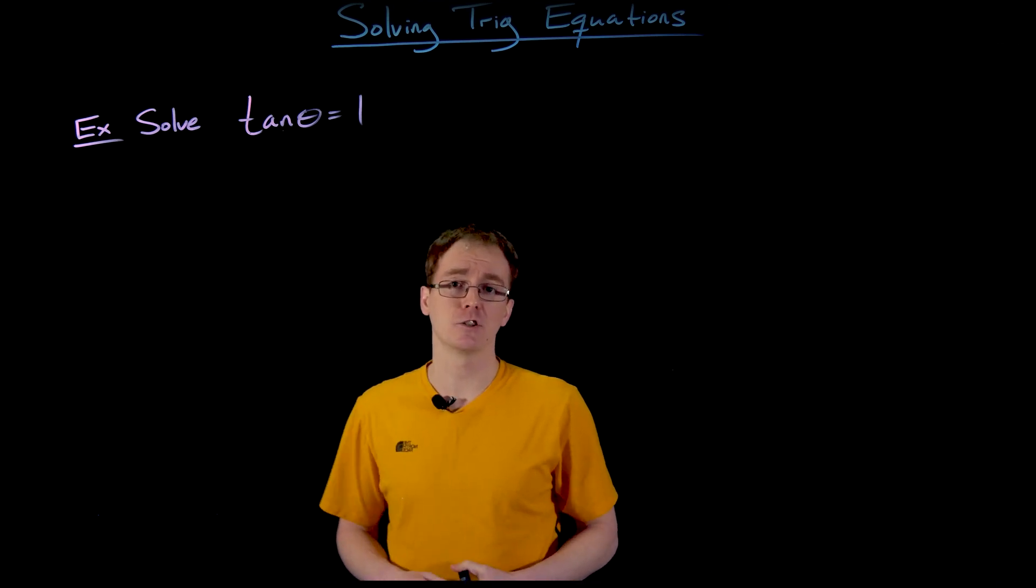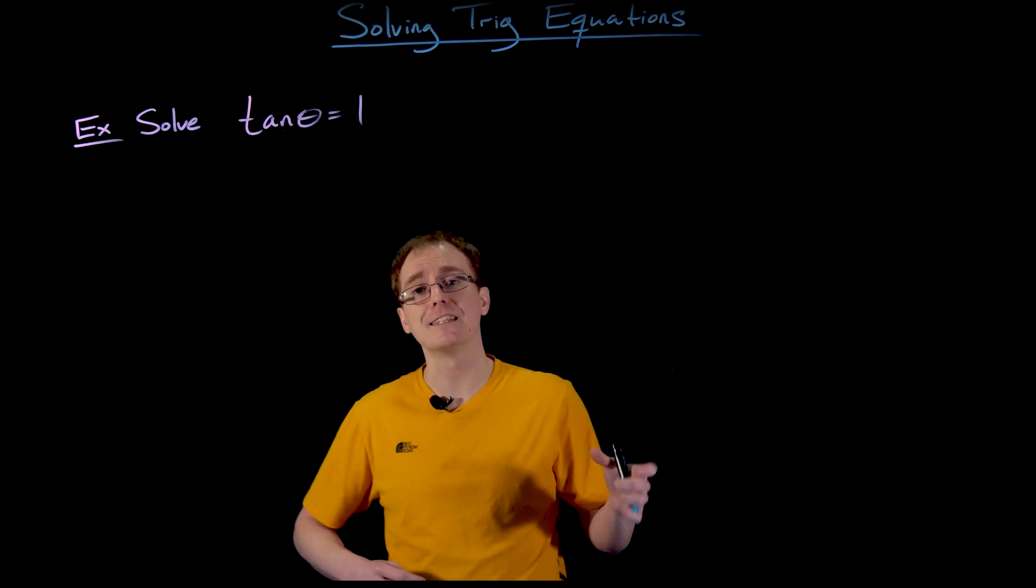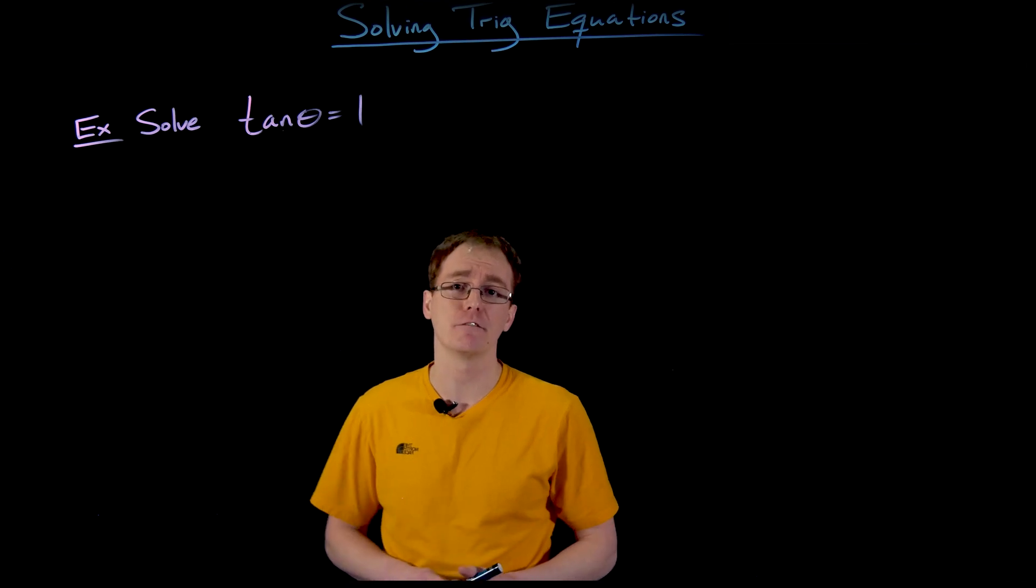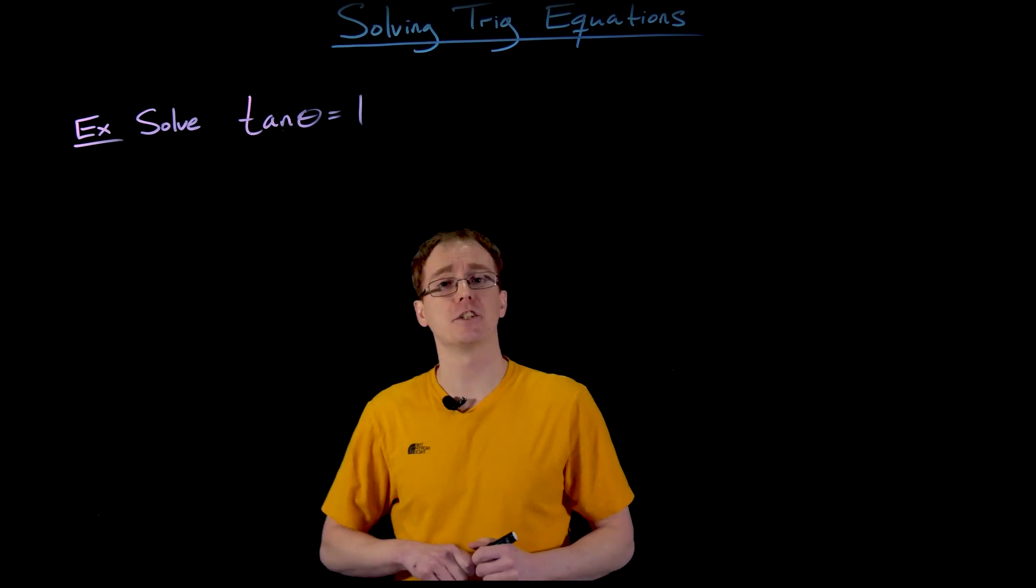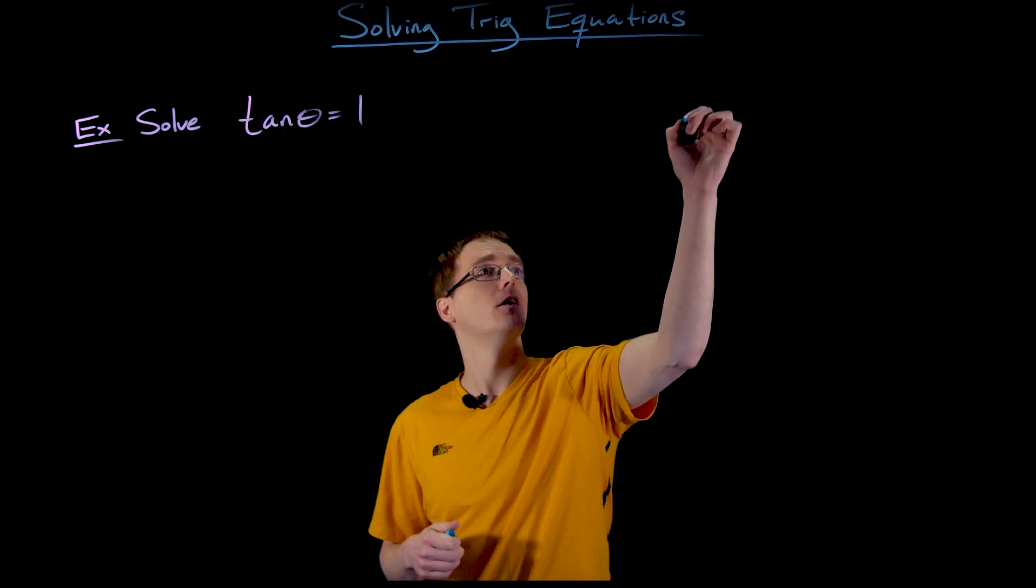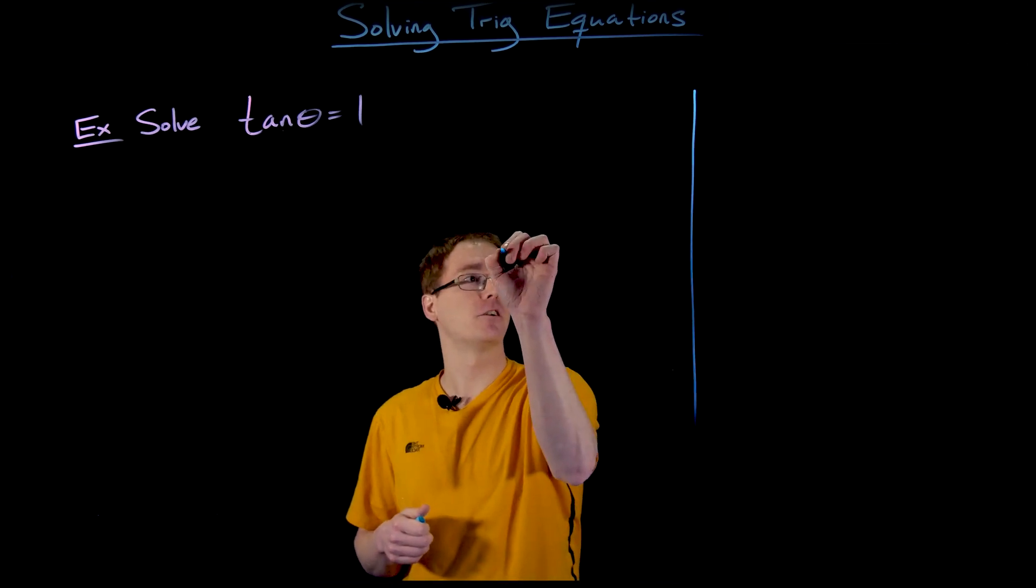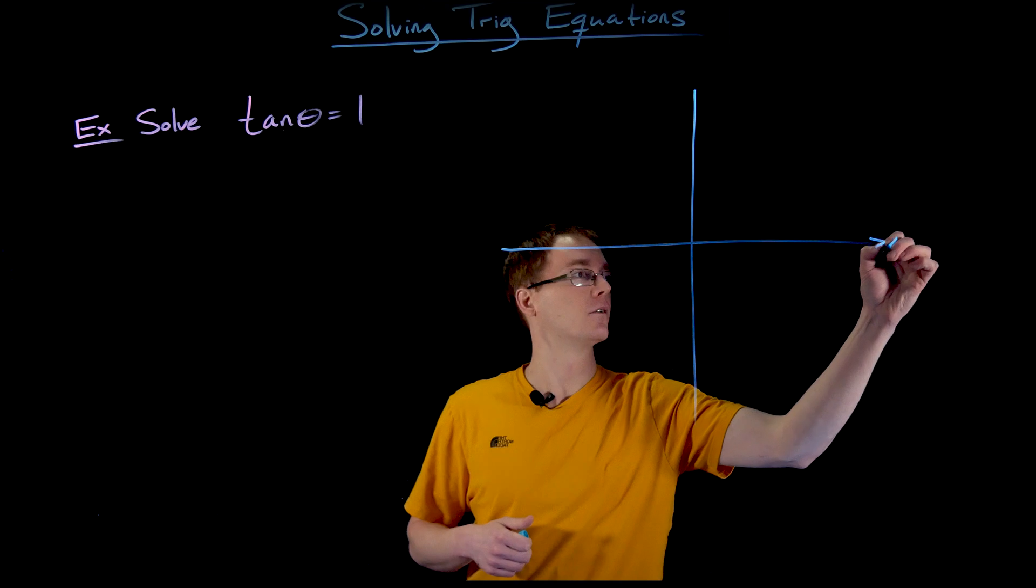For sine and cosine, we talked about the unit circle as well as the independent graphs of those functions. When it comes to solving tangent equations, we don't really need the unit circle—just the graph of the tangent function will be enough.